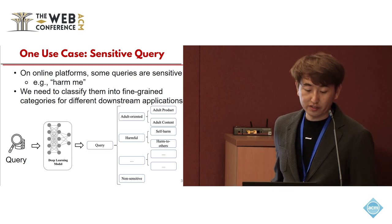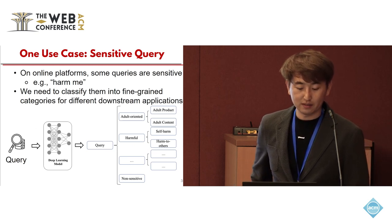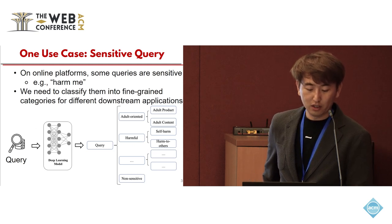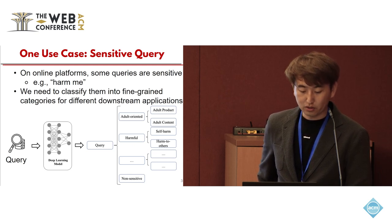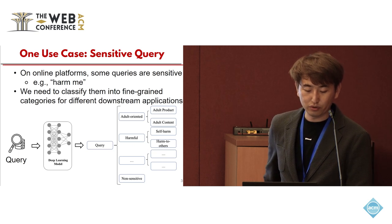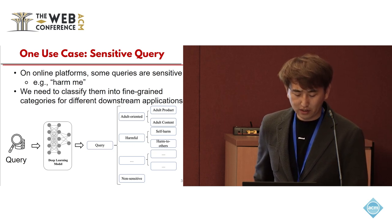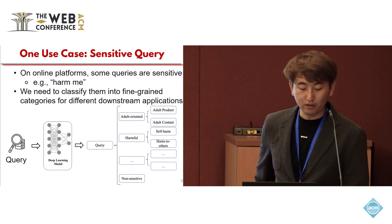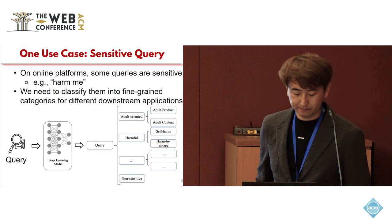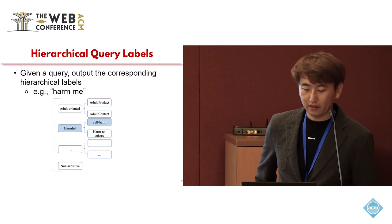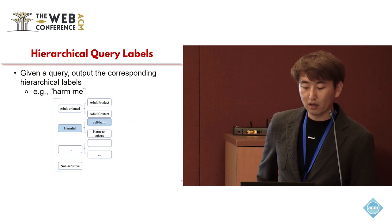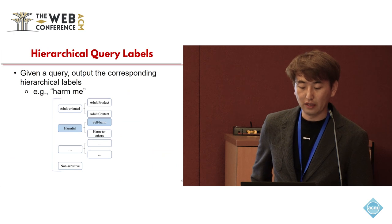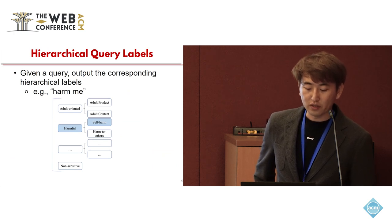However, among a large number of queries, we need to be especially careful with sensitive queries. This can include those that show an intention to harm people or involve adult-oriented products. To avoid encouraging the platform to present products for these sensitive queries, we need to classify them carefully into fine-grained categories for downstream applications. For example, given the query 'harm me,' we first classify it as a harmful query and then as self-harm, giving limited products for this.